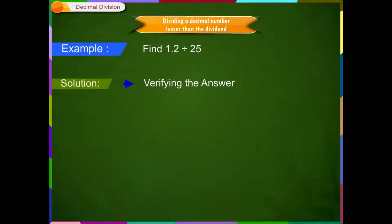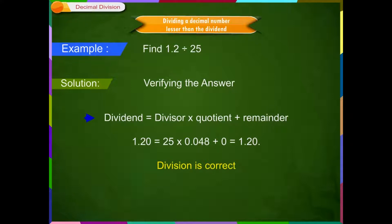Verifying the answer. To check, we use the rule: dividend is equal to divisor into quotient plus remainder. Putting all the values in the rule, we get... Since LHS is equal to RHS, so the division we performed is correct.